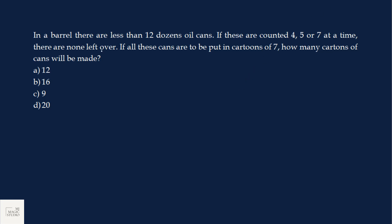In a barrel, there are less than 12 dirgian oil cans. 1 dirgian equals 12, that means 12 into 12 is 144. Number of oil cans are less than 144. If these are counted 4, 5 or 7 at a time, there are none left over, that means the number is divisible by 4, 5 and 7. Then LCM of 4, 5, 7 is 4 into 5, 20 into 7, 140. And this number is less than 144.